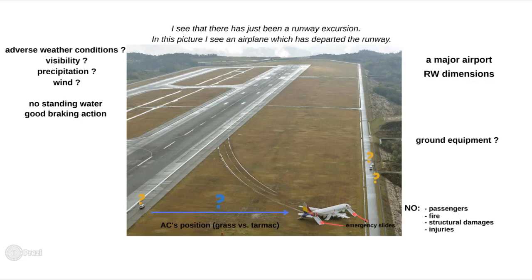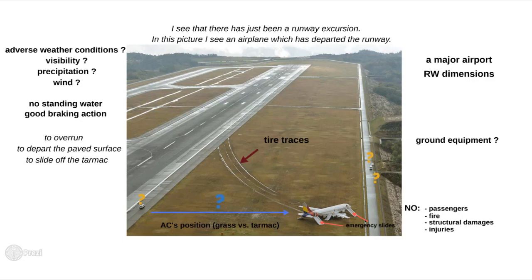The aircraft was apparently performing a landing, and it veered off the runway right after touchdown. There is a bunch of words we commonly use when talking about an excursion event, depending on the particular nature of each situation — they are 'to overrun,' 'to depart the paved surface,' or 'to slide off the tarmac.' We clearly see the tire traces, and during deceleration the aircraft performed a more than 90-degree turn, so the turning moment was quite significant.